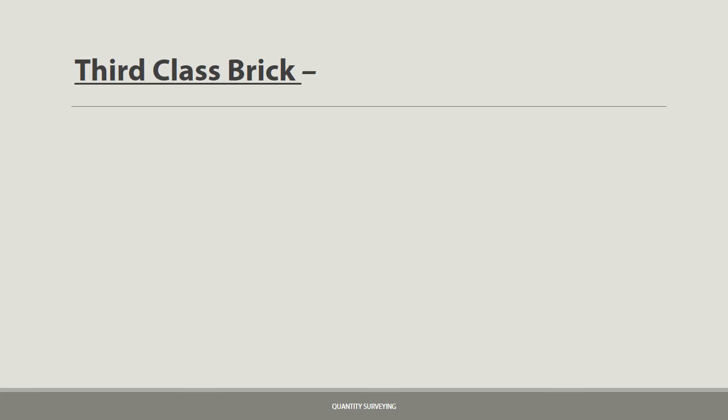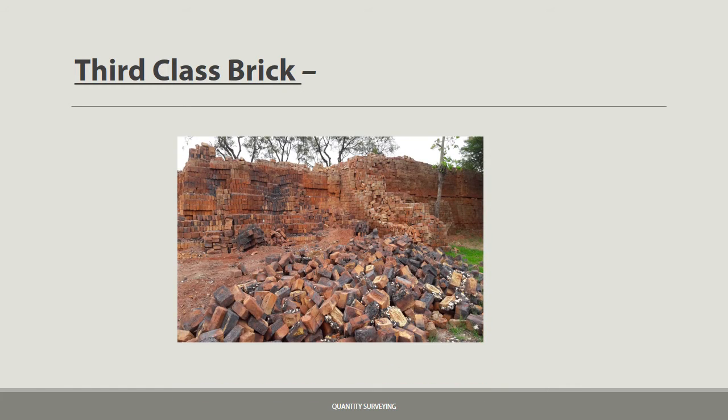Third class bricks are ground-moulded and burnt in kilns. These bricks are not hard and have a rough surface with irregular and distorted edges. They give a dull sound when struck together. They are used for unimportant and temporary structures, and at places where rainfall is not heavy.